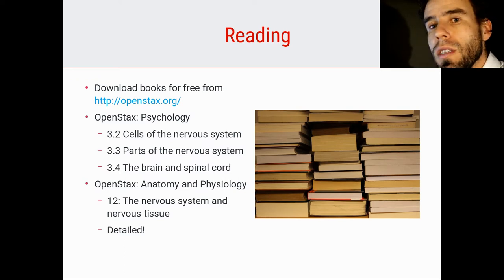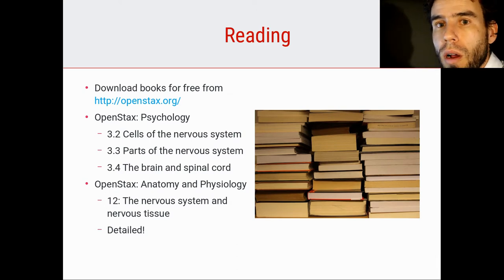Now, the anatomy and physiology textbook is fairly detailed. So if you really want to get into the subject matter, I would recommend reading chapter 12 from that textbook. If you prefer to have a quicker, less in-depth introduction into neurons and brain anatomy, I think that the psychology textbook is a good start. And of course, you can read both.